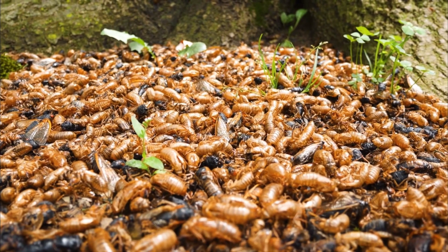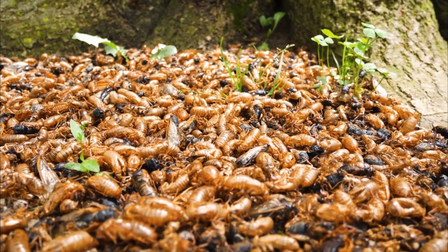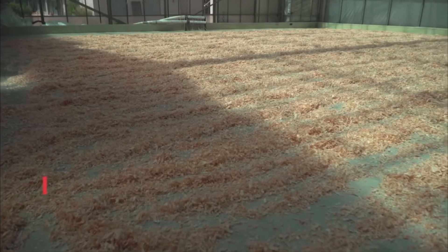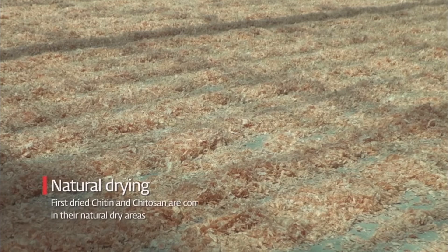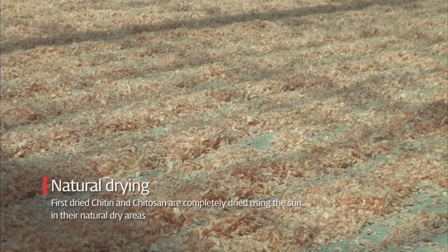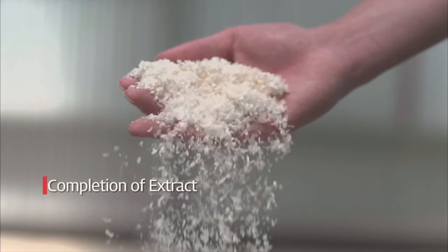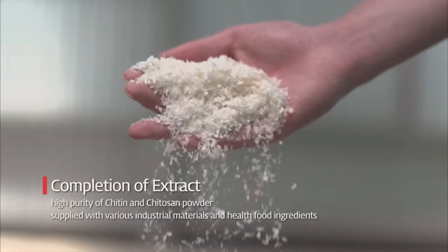Terrestrial insects are an excellent source of chitosan due to their abundance, accessibility, and relatively high chitin content. The team looked at insects as a sustainable source because they can be easily farmed and harvested in large quantities without contributing to environmental pollution.